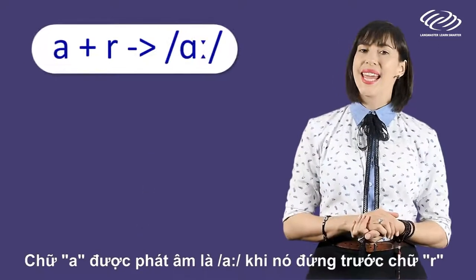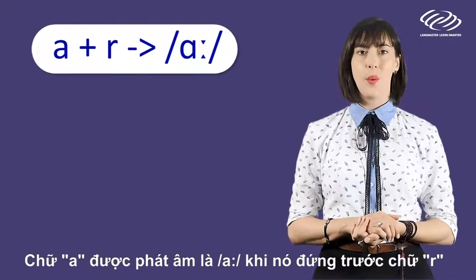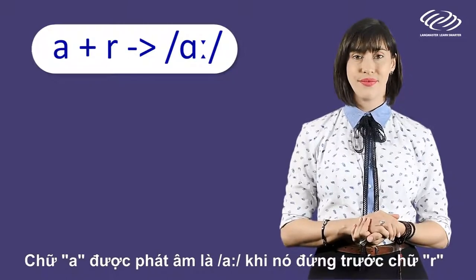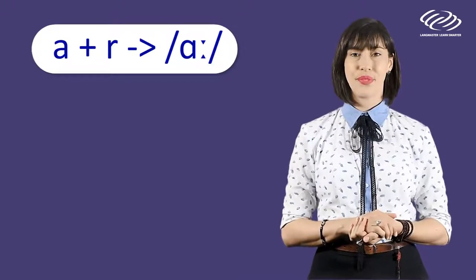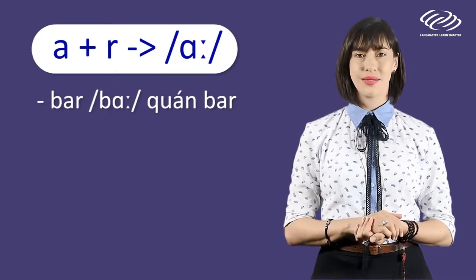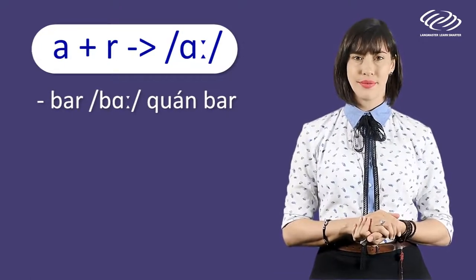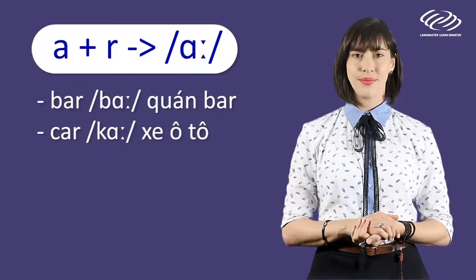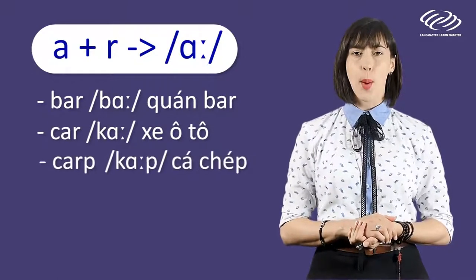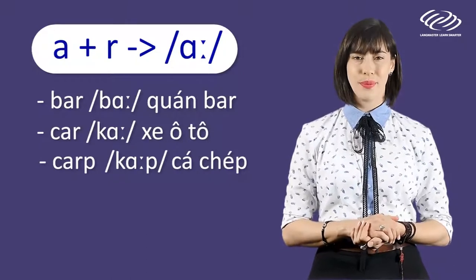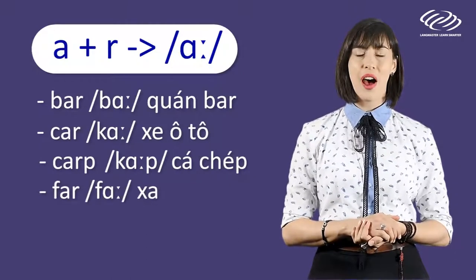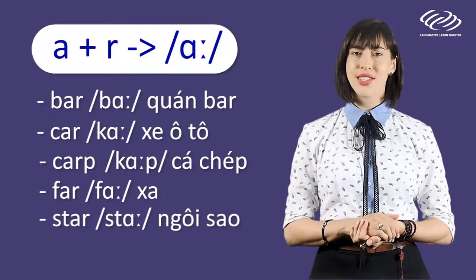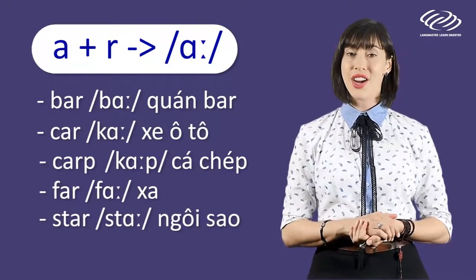The AH sound. A is pronounced as AH when it comes before the consonant R. For example: bar, car, carp, far, star.